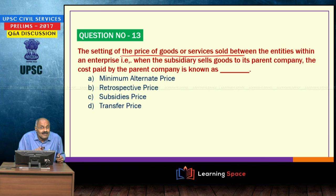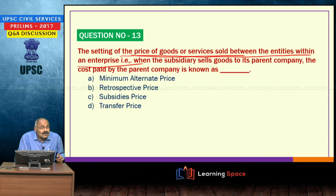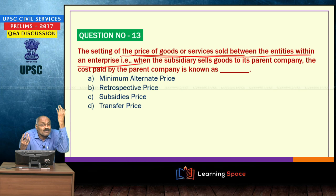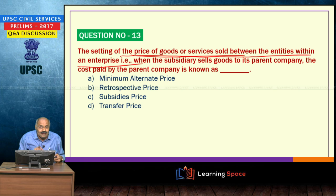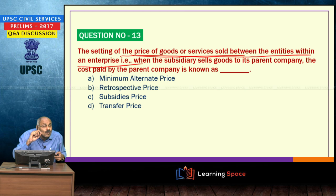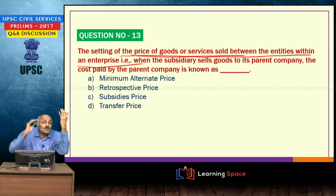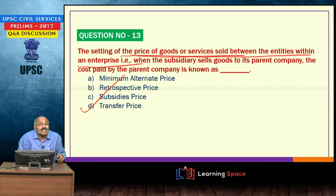Transfer price refers to the setting of the price of goods or services sold between entities within an enterprise. For example, Hyundai Motors — a Korean company — manufactures cars in India. If a car is sold to the parent company, the price at which it is sold is the transfer price. This is also related to advanced pricing agreements.